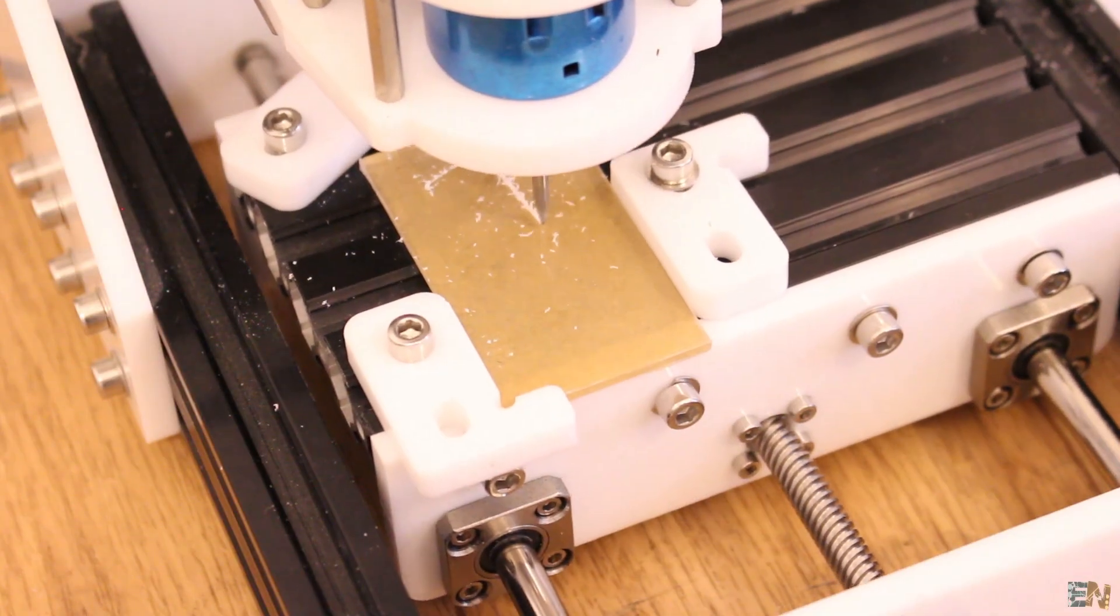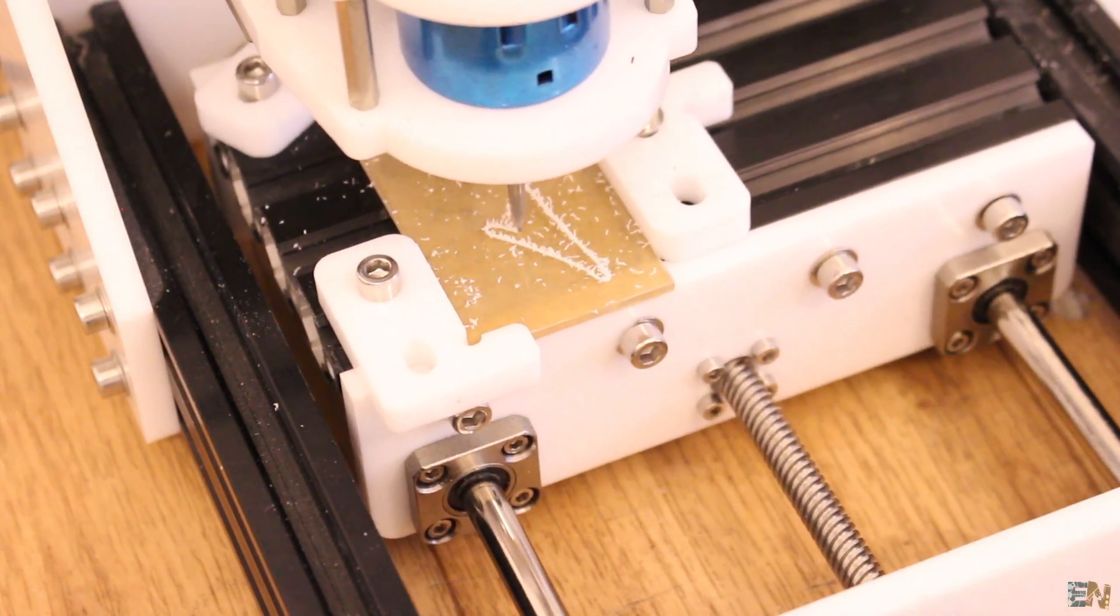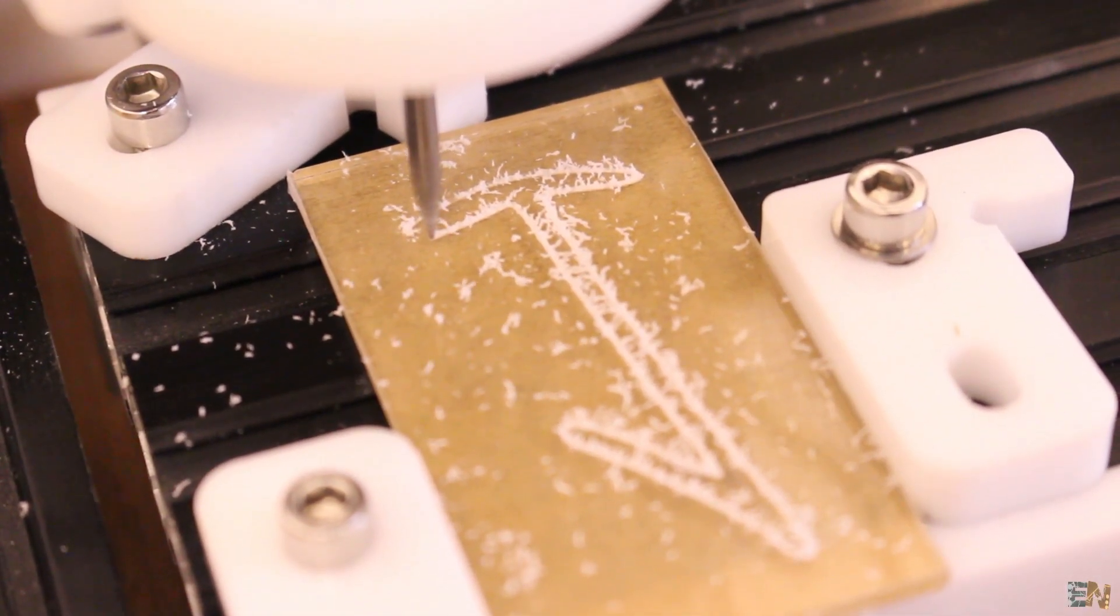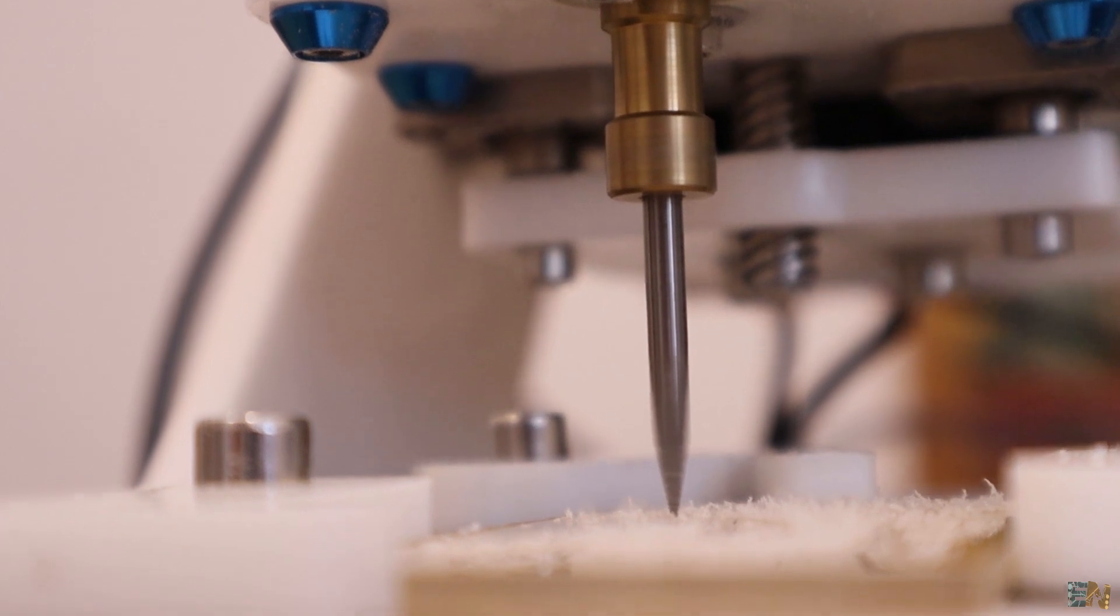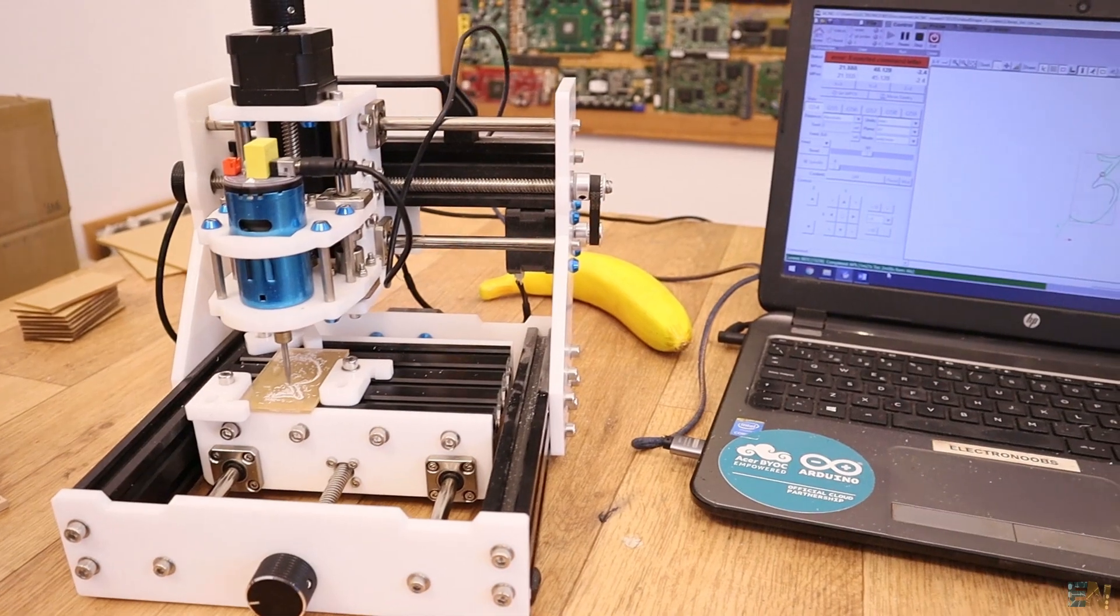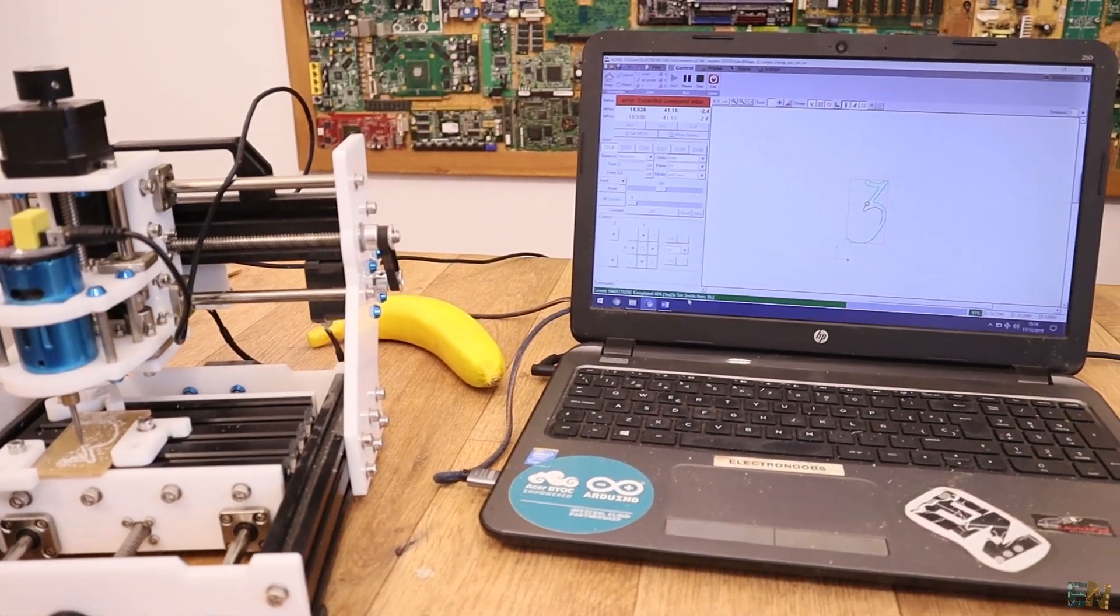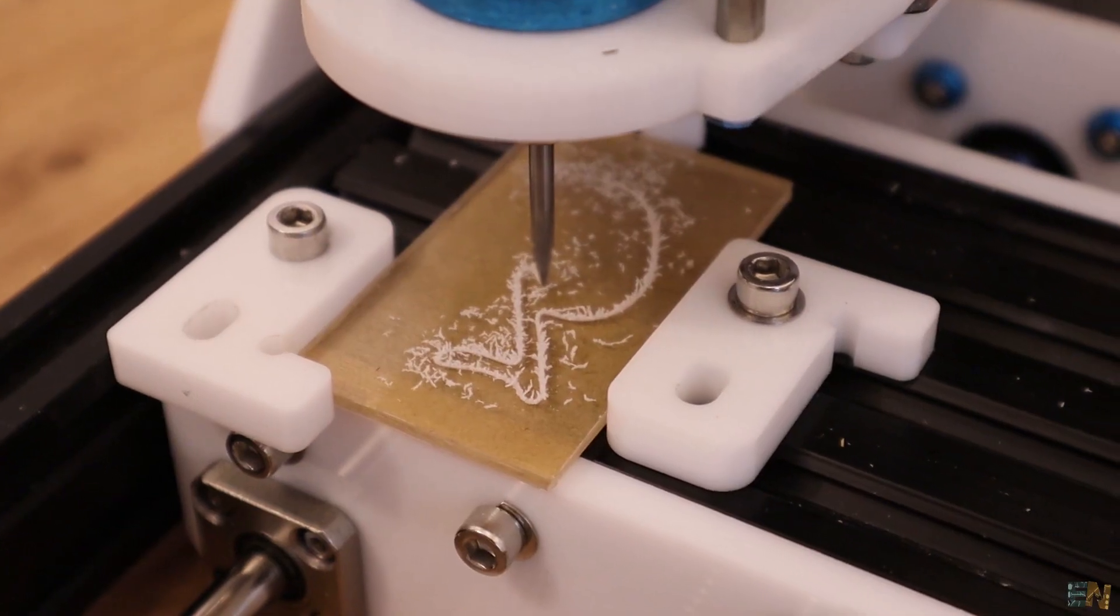Make sure that the acrylic board is well fixed in place so it won't move. Also that it is flat on the CNC bed, otherwise the engraving depth won't be the same. Once you get how this works, the process is quite easy and fast.